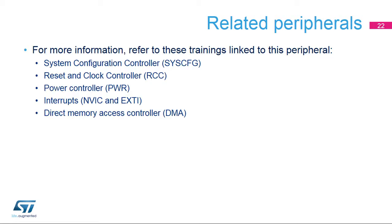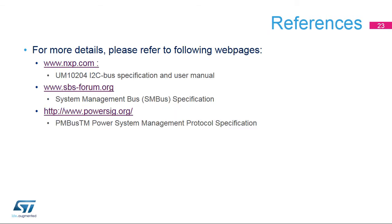For more information related to this peripheral, you can also refer to these trainings: system configuration controller, reset and clock controller, power controller, interrupts controller, and direct memory access controller. For more details, please refer to the I2C bus specification and user manual from the NXP website. The SMBus specification can be found in the Smart Battery System Implementers Forum. The PMBus power system management protocol specification can be found in the Power Management Bus Implementers Forum.